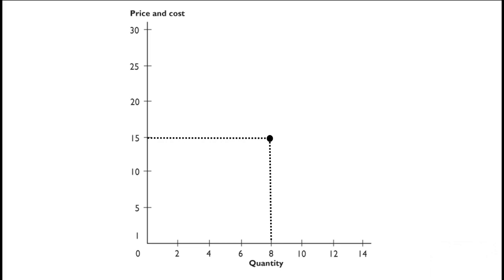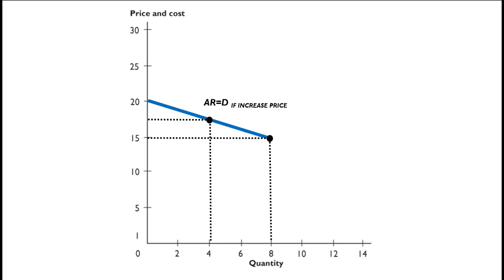Here's one of our firms in the market. It has settled on charging a price of $15 and sells a quantity of eight units. What if this firm increased its price? In that case the rivals would not follow suit — they would maintain prices where they were. So this firm, by increasing its price, will suffer a large fall in quantity demanded. If we draw in the demand curve — the average revenue curve — we can see it's quite flat, roughly indicating that demand is price elastic.